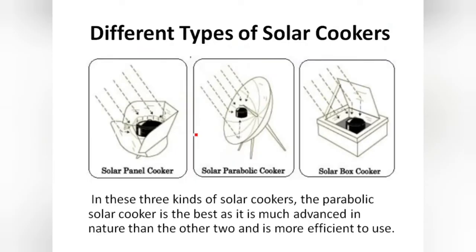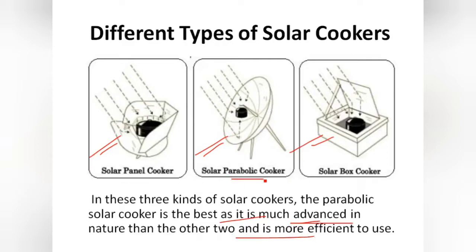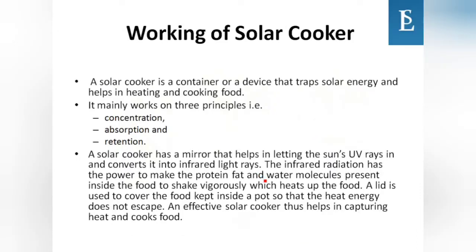There are different types: solar panel cooker, solar parabolic cooker, and solar box cooker. Among these, the parabolic solar cooker is the best as it is most advanced and efficient. A solar cooker works on three principles: concentration, absorption, and retention. It traps solar energy using a mirror that converts ultraviolet rays into infrared light, which heats the protein, fat, and water molecules in food.